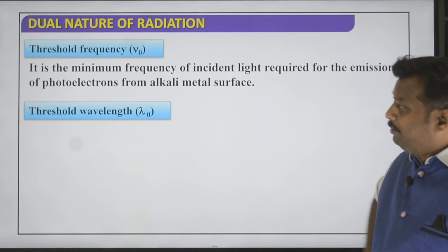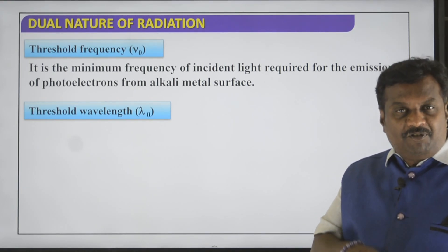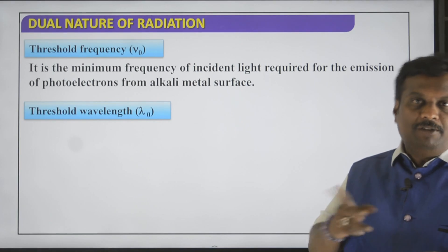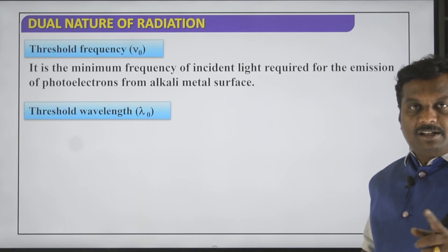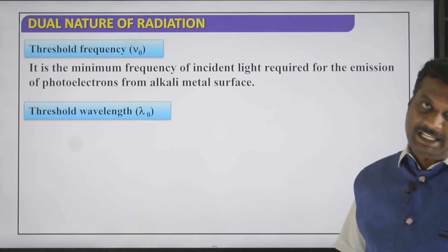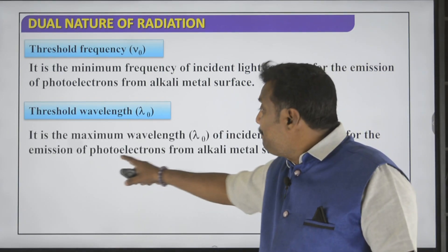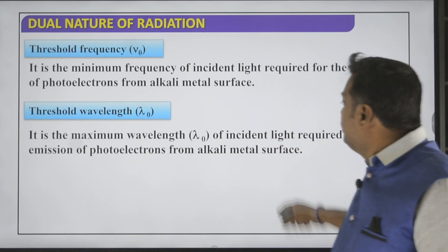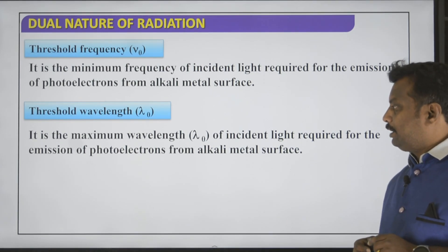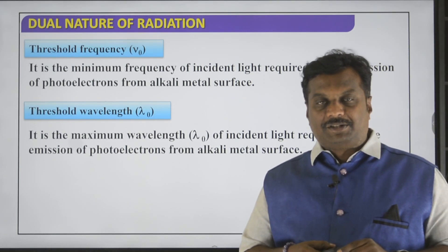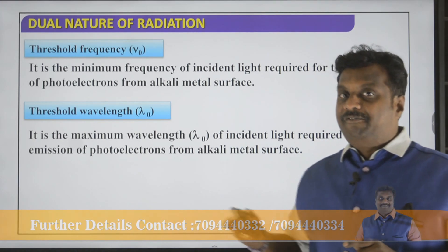What is threshold wavelength? Since frequency and wavelength are inversely proportional, minimum frequency means maximum wavelength. So threshold wavelength is the maximum wavelength of incident light required for the emission of photoelectrons from the alkali metal surface.